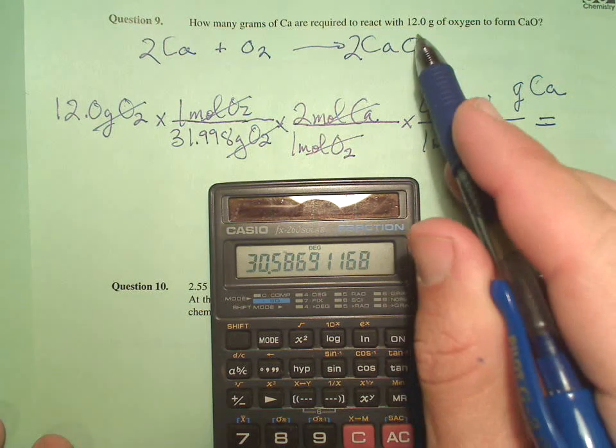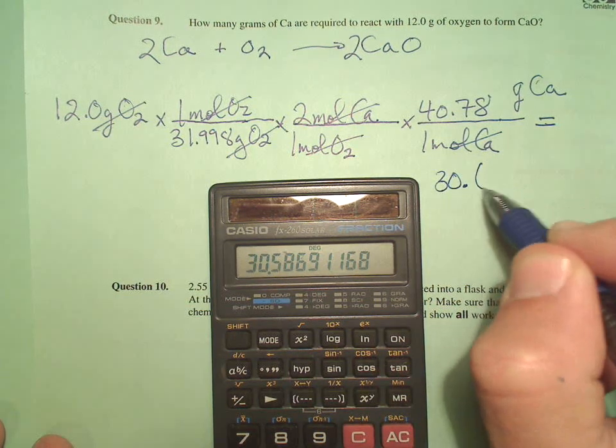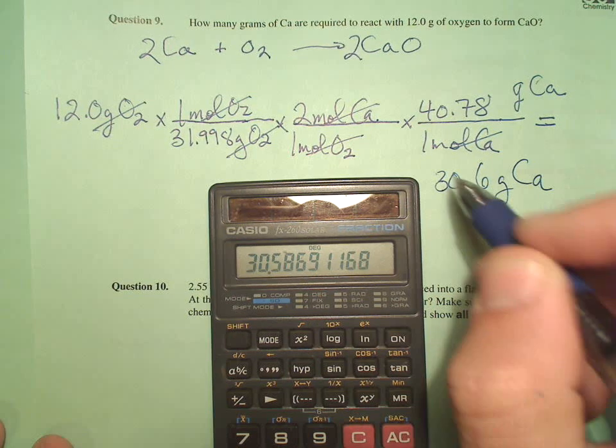30.56. How many sig figs are we good to? Three. So 30.6. 30.6 grams of calcium.